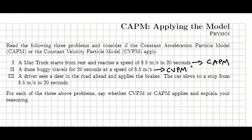In the third one, a driver sees a deer and brakes. The car slows to a stop. Again, we're changing the speed, so we're definitely changing the velocity, going from 8.5 meters per second to 0 as it brakes, and so that's going to put us in the CAPM area.